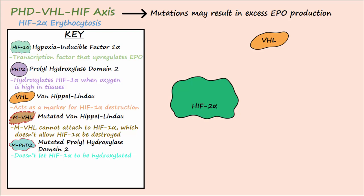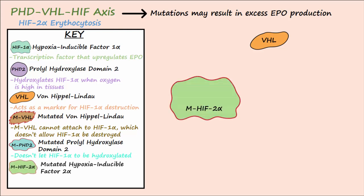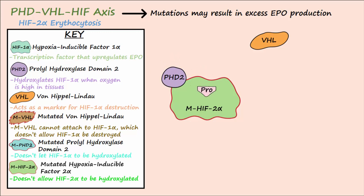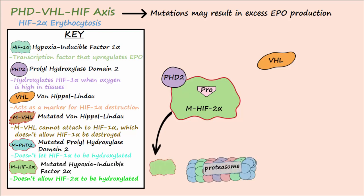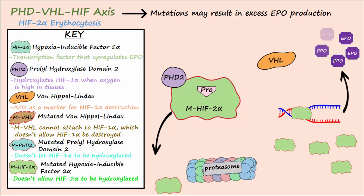HIF2-alpha erythrocytosis is a mutation in HIF2-alpha. HIF2-alpha has a similar action as HIF1-alpha but is located in cells involved in erythropoiesis and vascularization. Mutations in HIF2-alpha impair its ability to be hydroxylated, so VHL is unable to bind to unhydroxylated HIF2-alpha. This prevents HIF2-alpha from being targeted and broken down by proteasomes, causing HIF2-alpha levels to rise and increasing EPO expression.